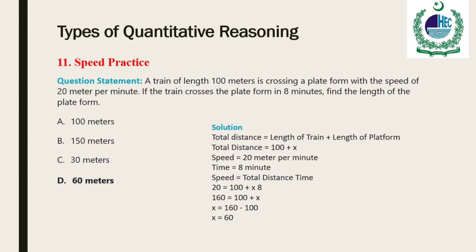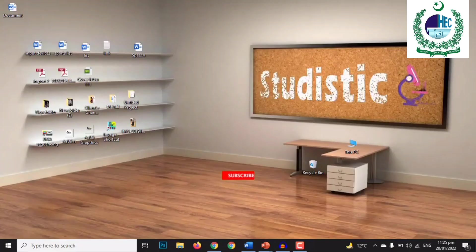We all know that speed is the distance traveled divided by the time taken. Problems on speed usually involve something or someone moving at a constant or average speed, and out of the three quantities — speed, distance, and time — we are required to find out the missing one. Information regarding the other two will be provided in the question stem. These were all about the quantitative reasoning questions.